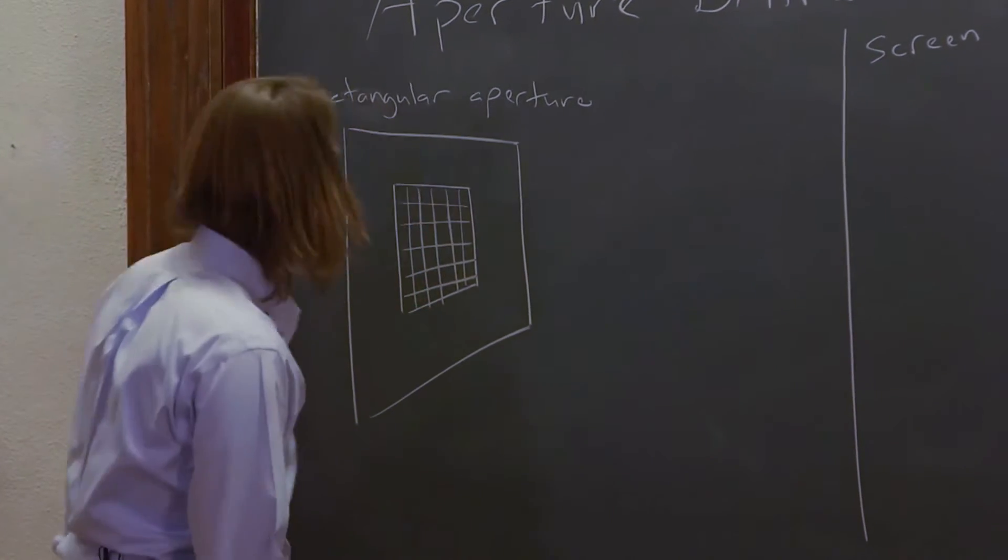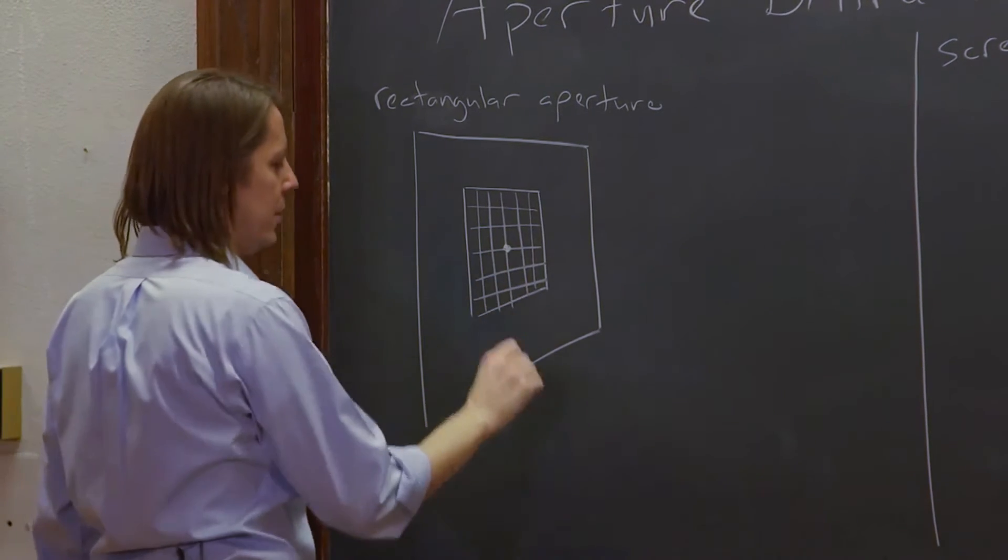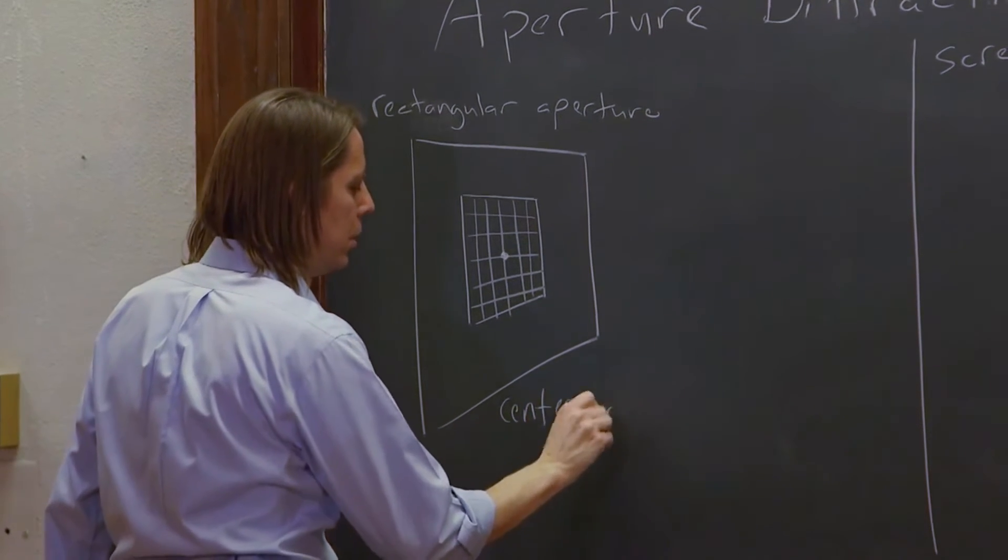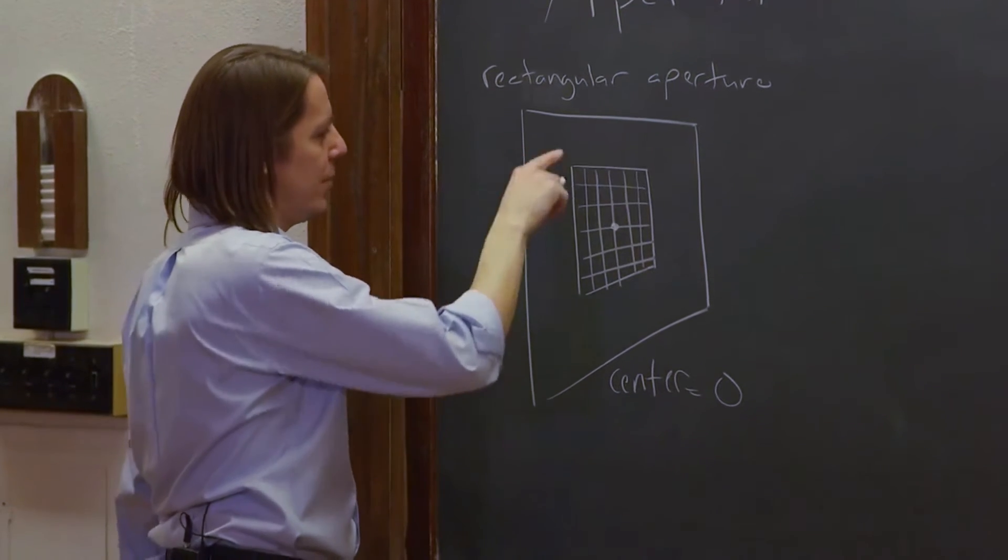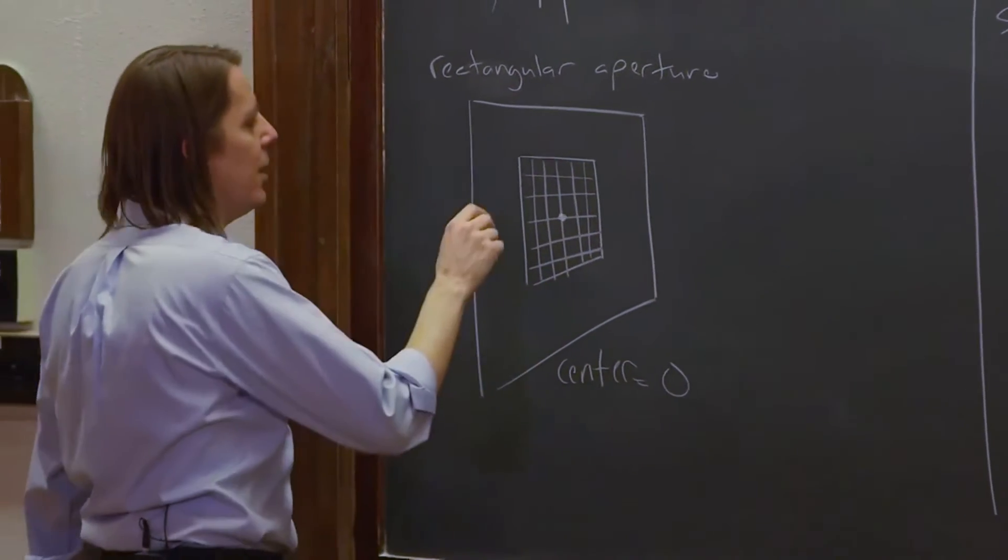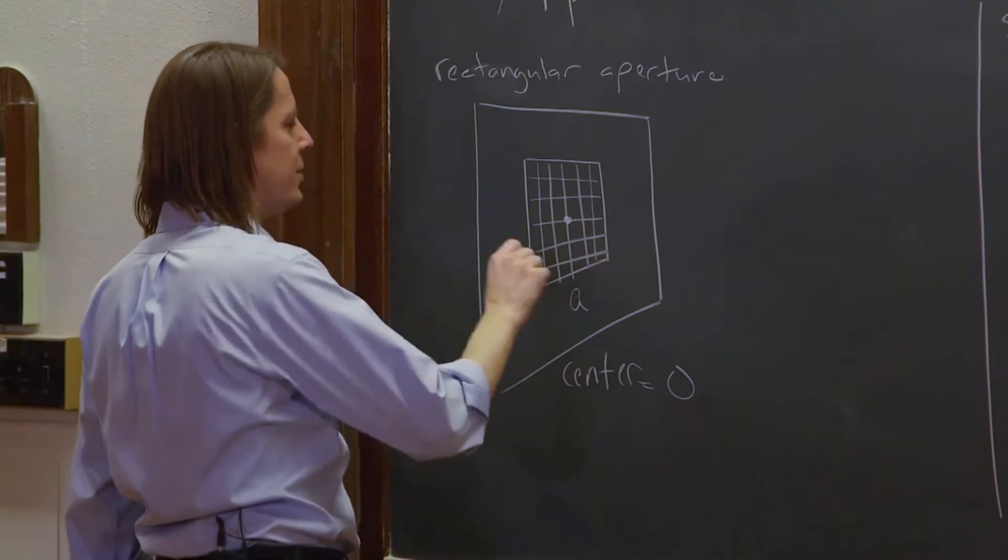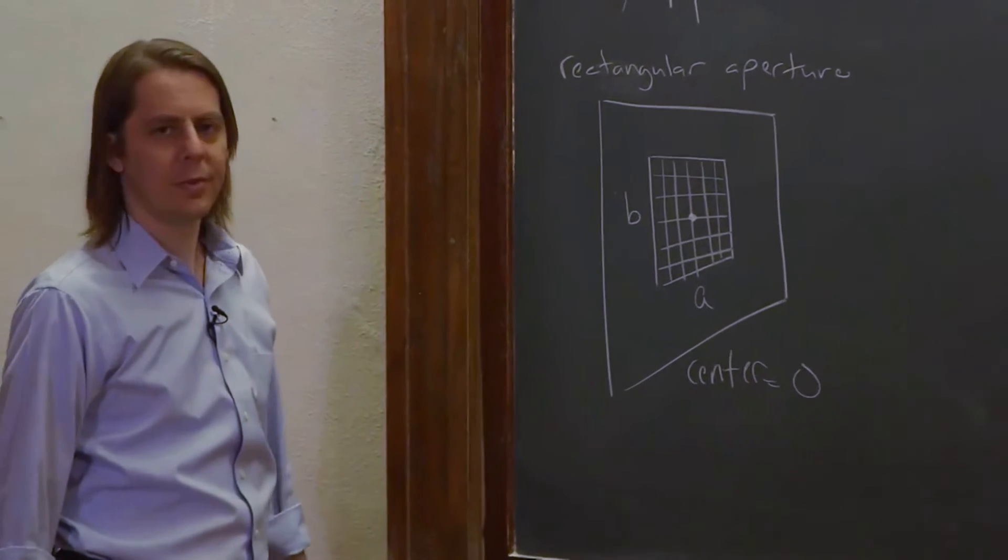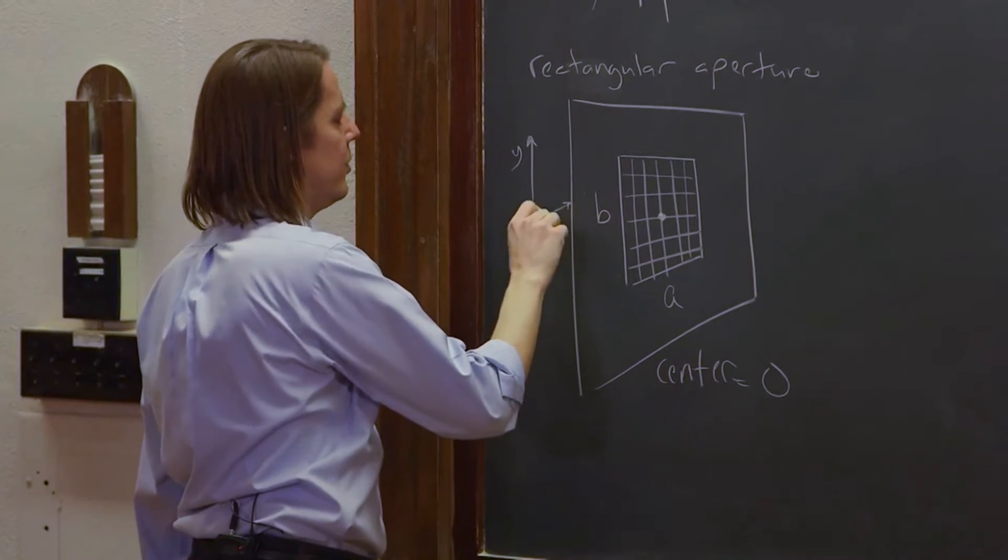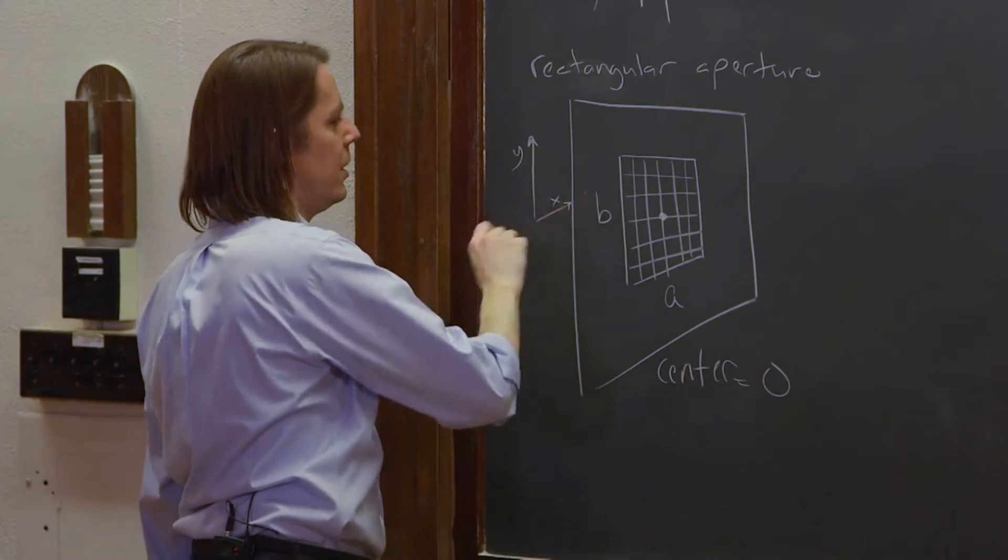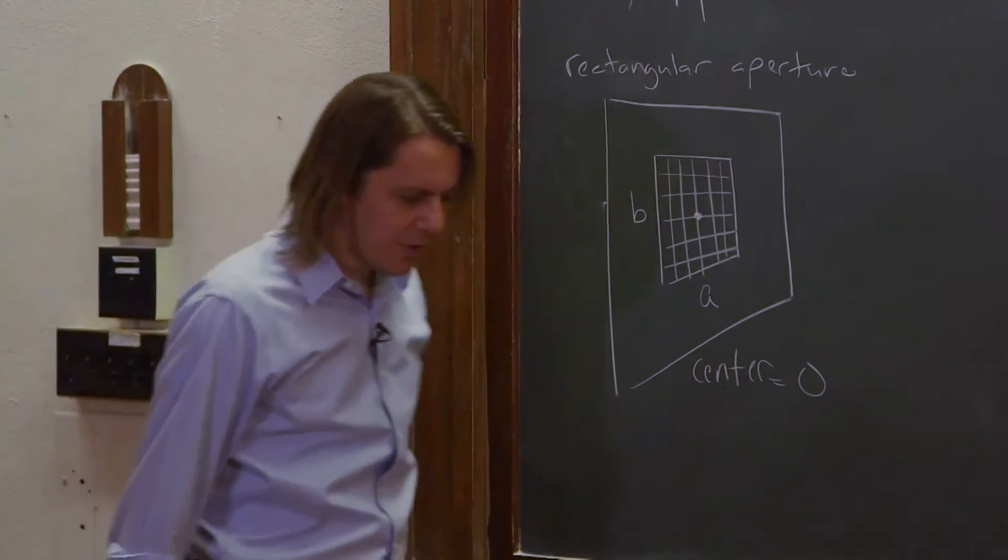We're going to treat the very center as the origin. So the center is the origin, and we're going to call this direction Y, this direction X. And the aperture is A along the X direction and B along the Y direction. Y goes up, X goes that way, and then Z is the optical axis. That's what we've got.